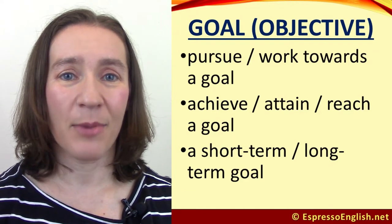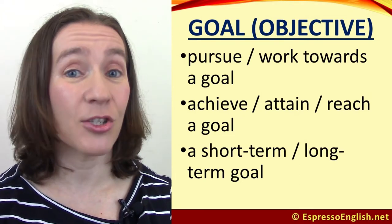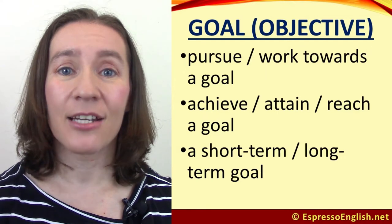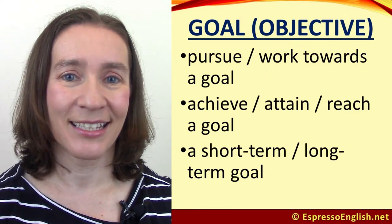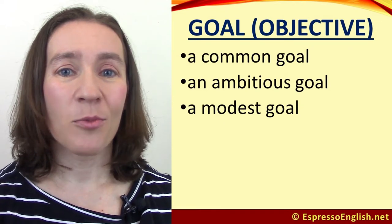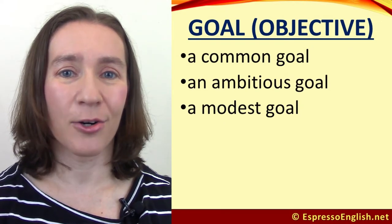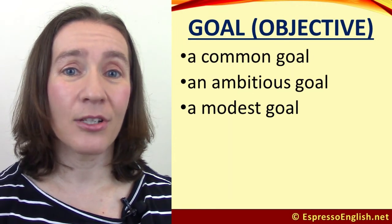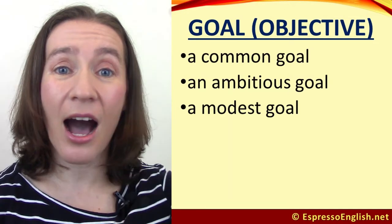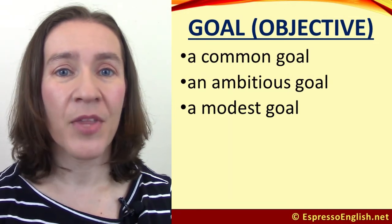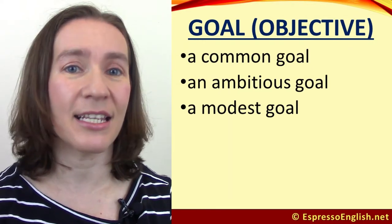We also talk about short-term and long-term goals. A short-term goal is one that you will complete soon, in the near future. A long-term goal is one that will take a long time to complete. If two or more people or groups share a goal, we can call it a common goal. An ambitious goal is one that is very high and will be difficult to achieve, while a modest goal is one that is not so high and will probably be easier to achieve.